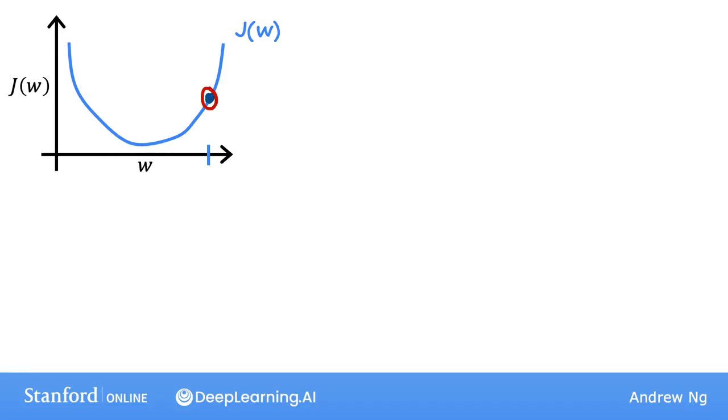What gradient descent will do is, it will update w to be w minus learning rate alpha times d over dw of J(w). Let's look at what this derivative term here means.